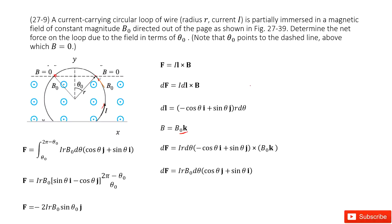So the magnetic force on this small fraction is DF, and DF equals I times DL cross B. Now, the arc length for each small section is R times dθ, because we consider this small angle as dθ — arc length equals radius times angle.